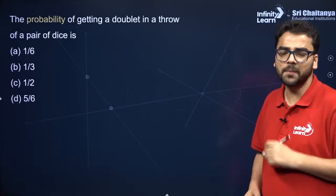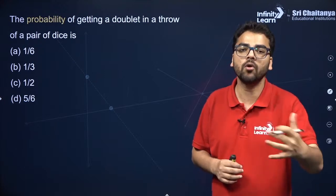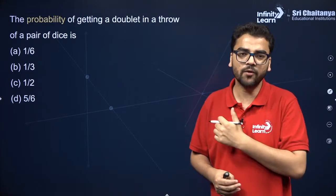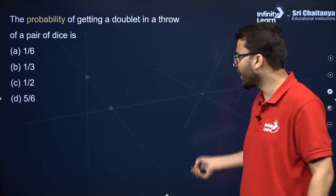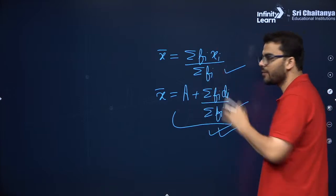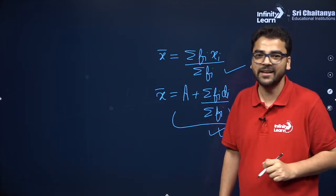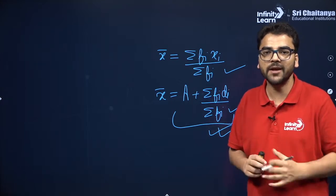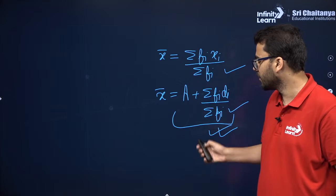Now we'll do some probability questions. We have already done statistics questions over the previous sessions. The assumed mean method is derived from the direct method; you use it to simplify calculations. The step deviation method simplifies it further but is not in the syllabus.